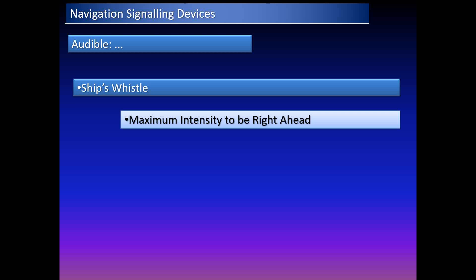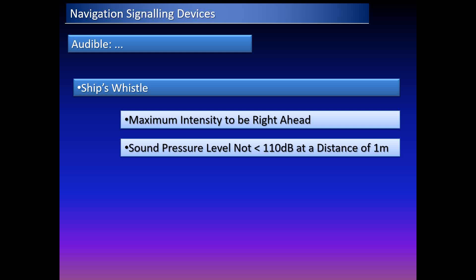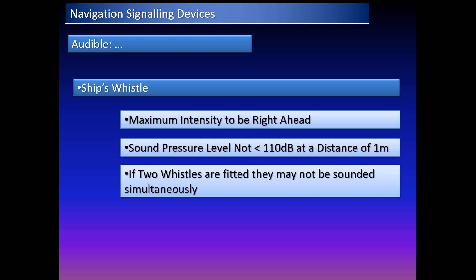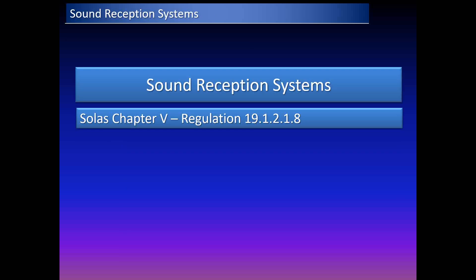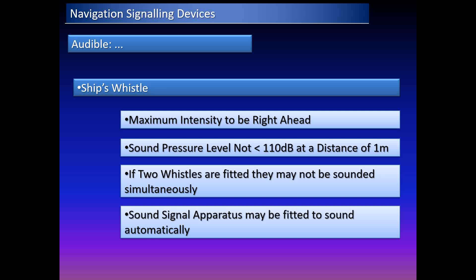For ship's whistles, the maximum intensity should be directed right ahead, and the sound pressure level shall not be less than 110 decibels at a distance of one meter. If two whistles are fitted, they may not be sounded simultaneously. The sound signaling apparatus may be activated manually or automatically by a switch. Sound signaling equipment must comply with Annex 3 of the COLREGS with regard to sound intensity and size.